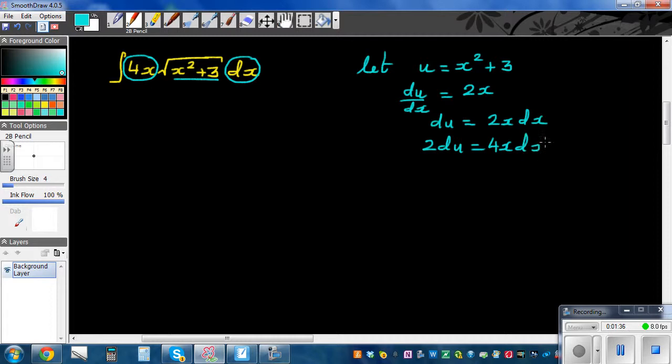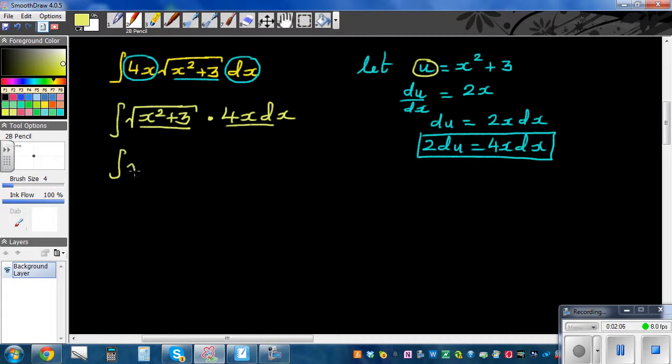In terms of 4x dx I can put 2 du. So this whole thing changes to the integration of square root of u times 2 du. You can factor the 2 out, so this is 2 times the integration of u to the power half du.